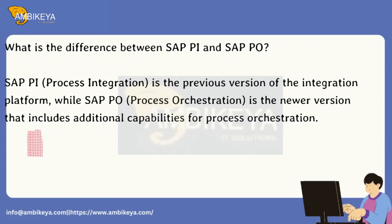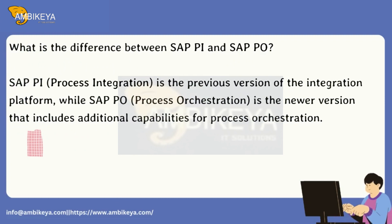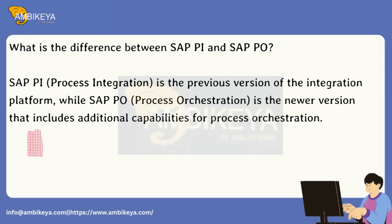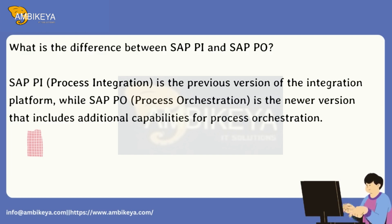What is the difference between SAP PI and SAP PO? SAP PI, Process Integration, is the previous version of the integration platform, while SAP PO, Process Orchestration, is the newer version that includes additional capabilities for process orchestration.